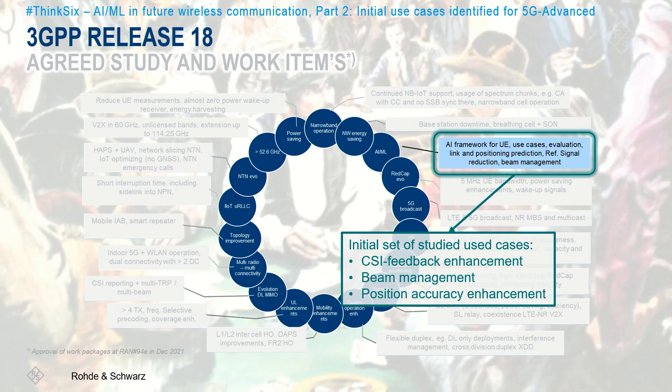For the air interface study item, 3GPP members agreed on three use cases as a basis for their study. First, CSI feedback enhancements with the goal of overhead reduction, improved accuracy, and channel prediction. Second, beam management — beam prediction in the time and/or spatial domain — with overhead and latency reduction and beam selection accuracy improvement. And third, positioning accuracy enhancements for different scenarios, including those with heavy non-line-of-sight conditions.